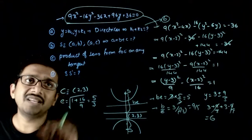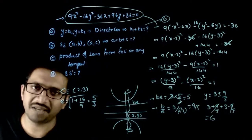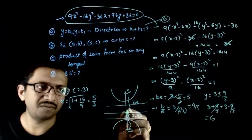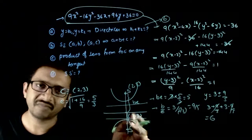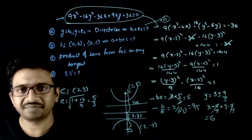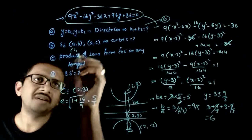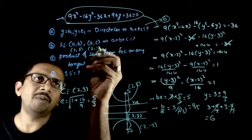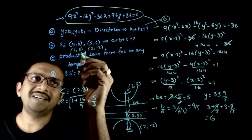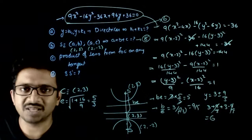Next, the foci are given as (a, b) and (a, c), and we want a + b + c. The foci are found by going 5 units up and down from center (2, 3). Going 5 units up gives (2, 8), and going 5 units down gives (2, −2). So a + b + c = 2 + 8 + (−2) = 8. That is the second answer.